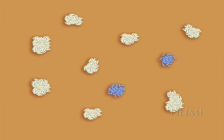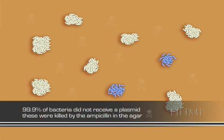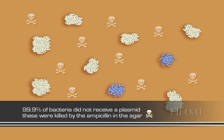On this plate, we have three different kinds of bacteria. The first is the bacteria that did not receive a plasmid. You can't see them because they are dead. That's 99.9% of the transformation stock that did not receive a plasmid. They did not get the gene for antibiotic resistance from the plasmids.